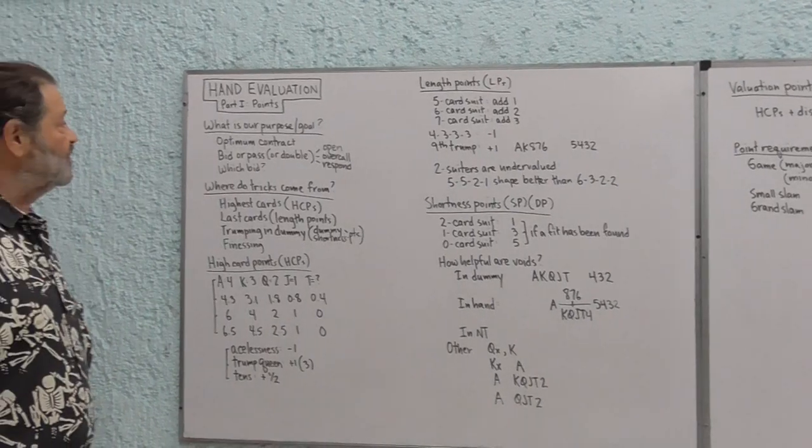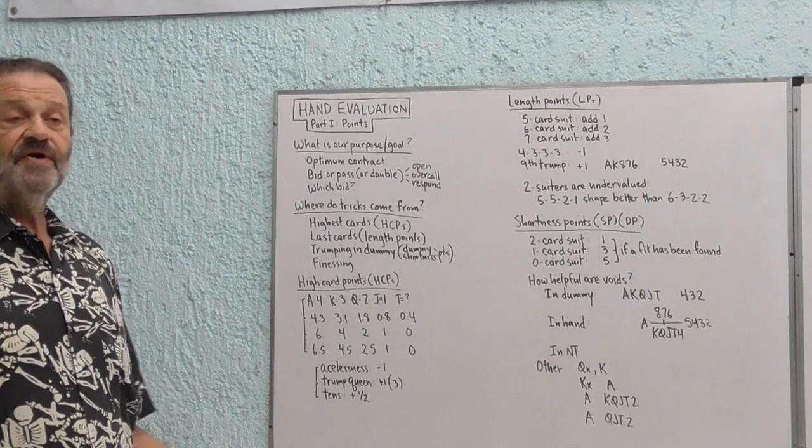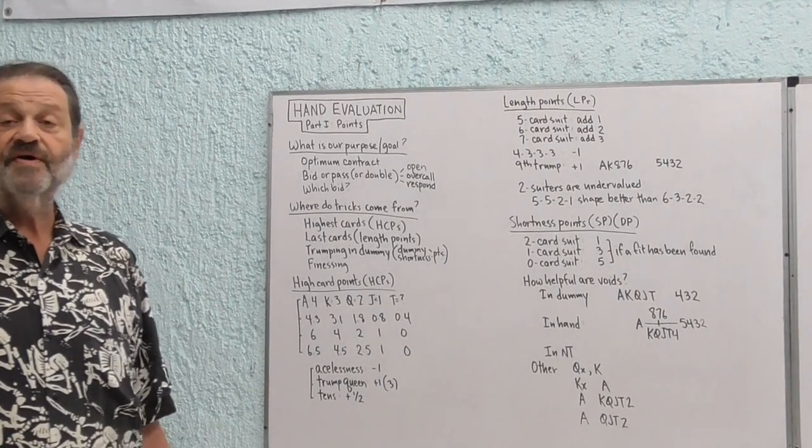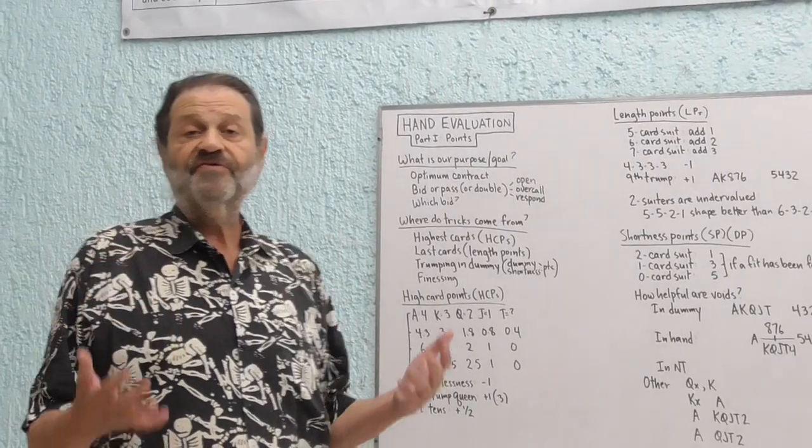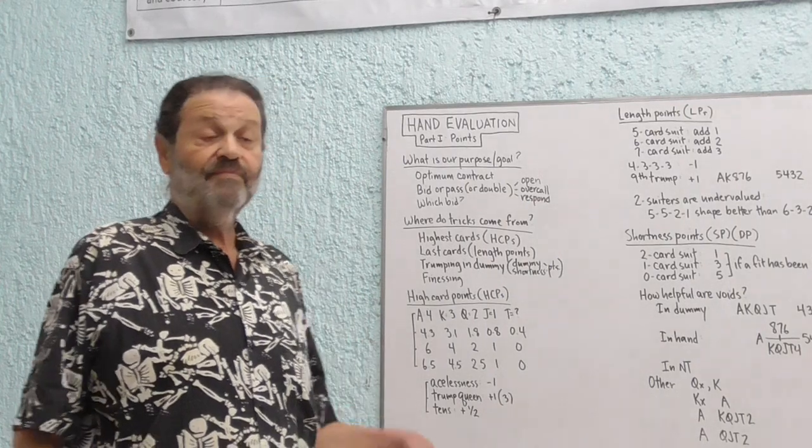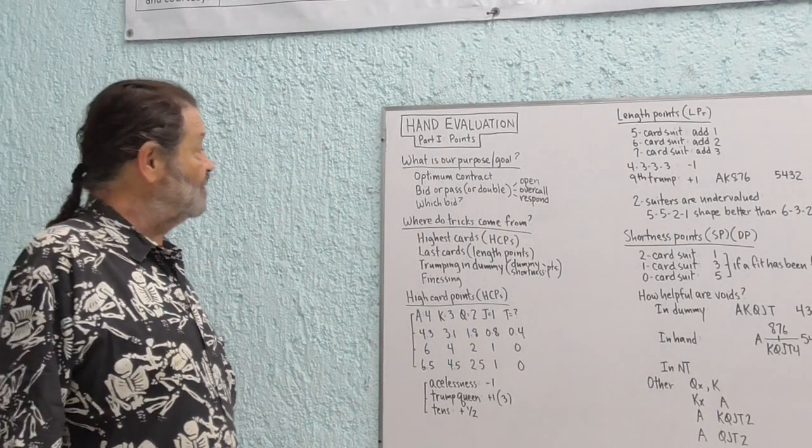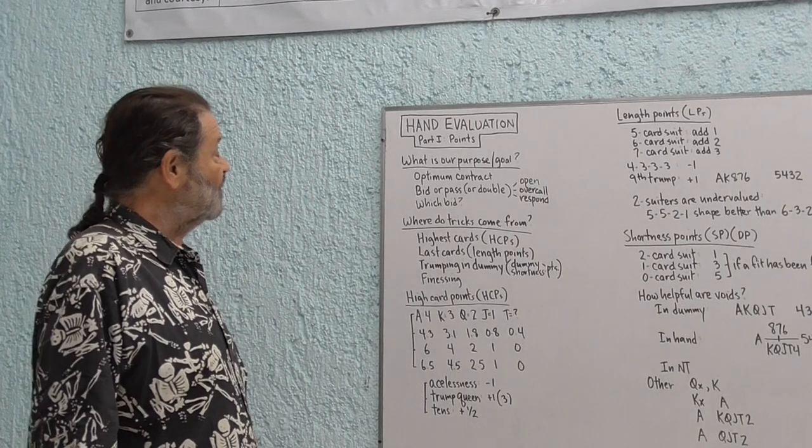So let's begin with what is our purpose, what is our goal when we sit down to the bridge table? What are we trying to do? We're trying to communicate with our partner, and we're trying to reach an optimal contract, and to do that we need to know what the strengths and weaknesses of our combined hands are and what they can do together. So we're bidding, and we're trying to convey information to our partner.